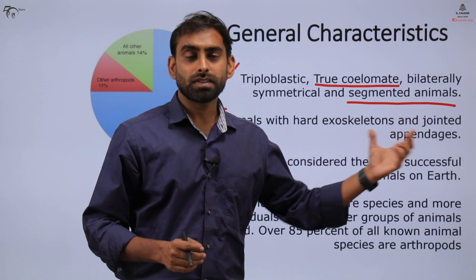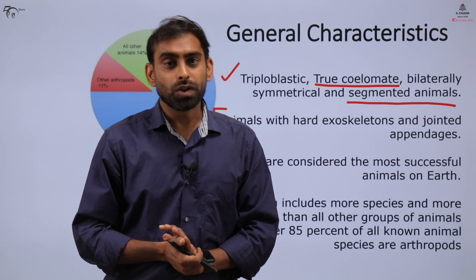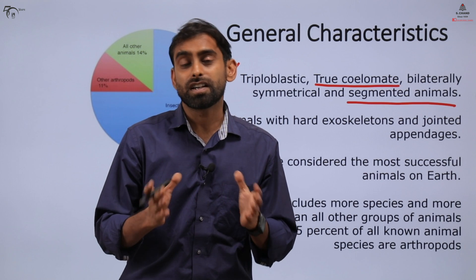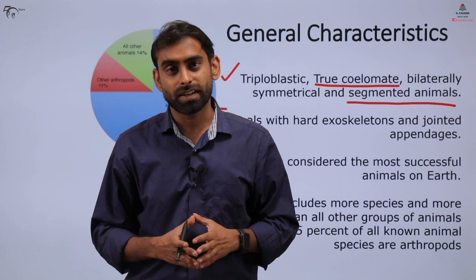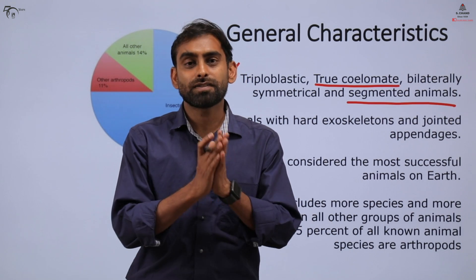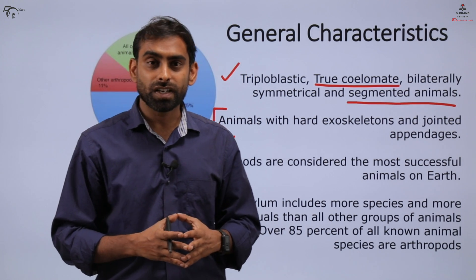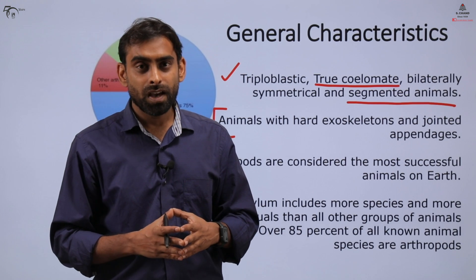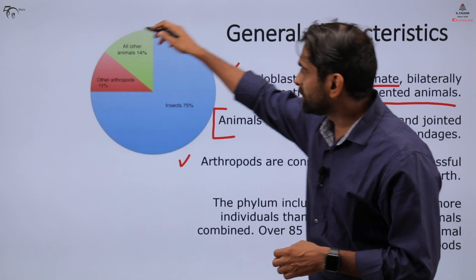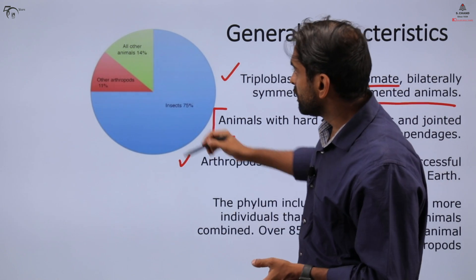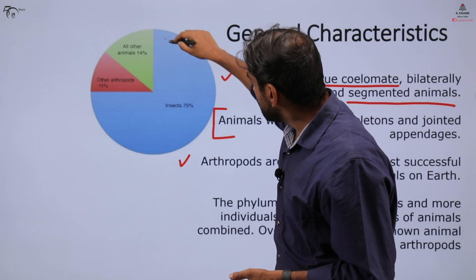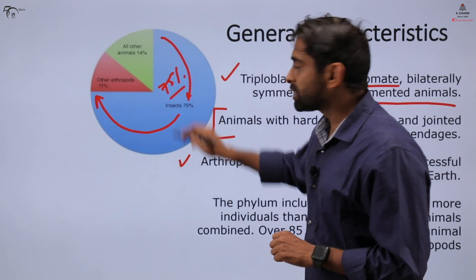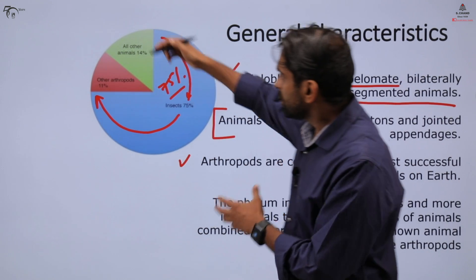Arthropods are considered the most successful organisms on Earth. Cockroaches, for example, are so ancient that they existed even before many other species developed, and they exist the same way today — they have evolved very little. They have survived mass extinctions and even meteorite impacts on Earth, which is why they are also named living fossils.